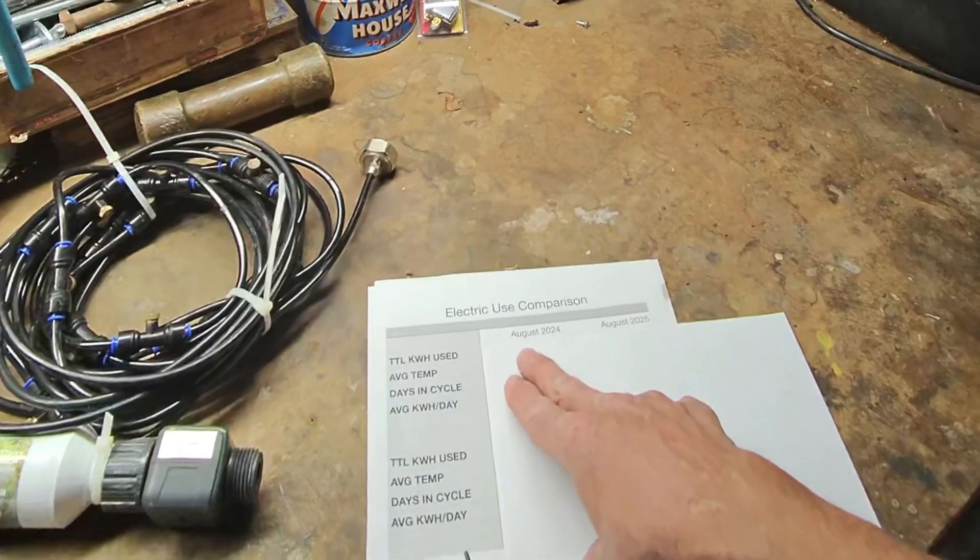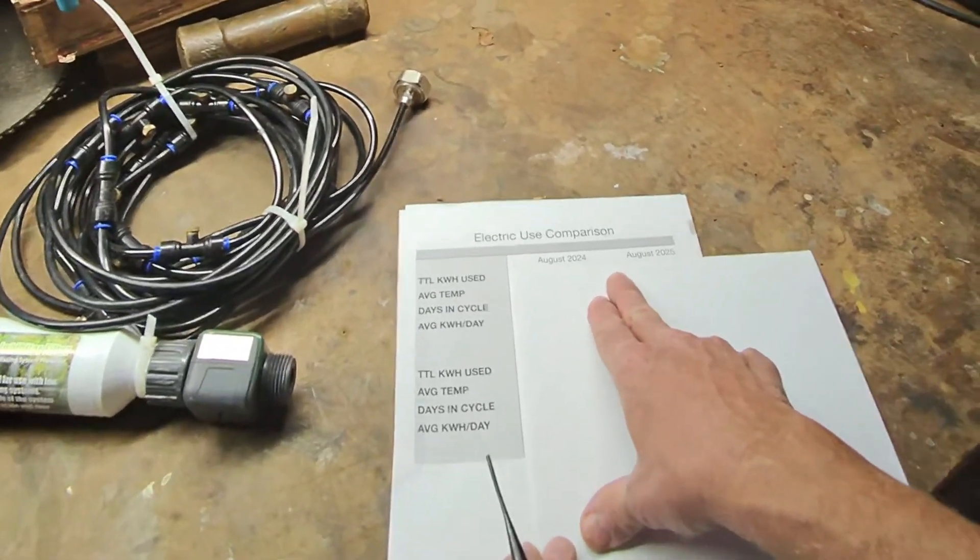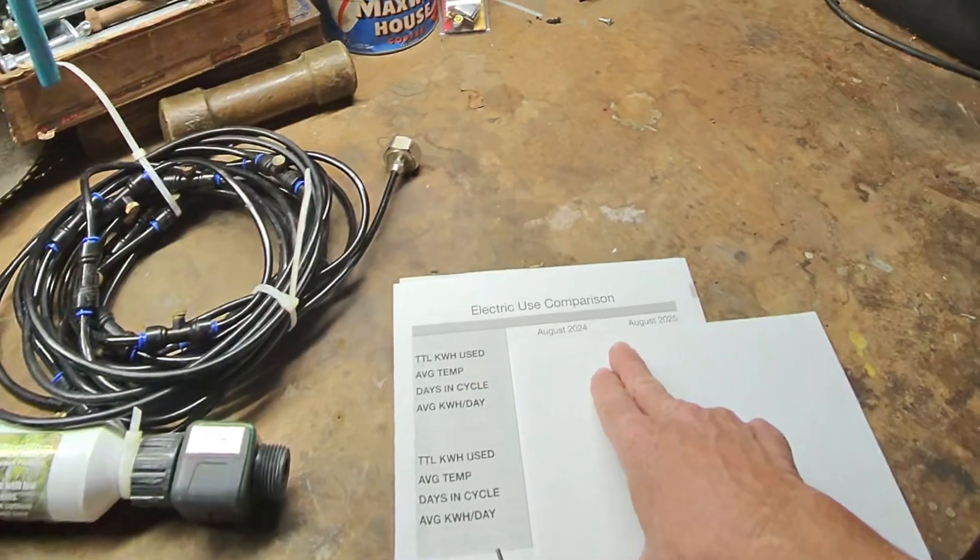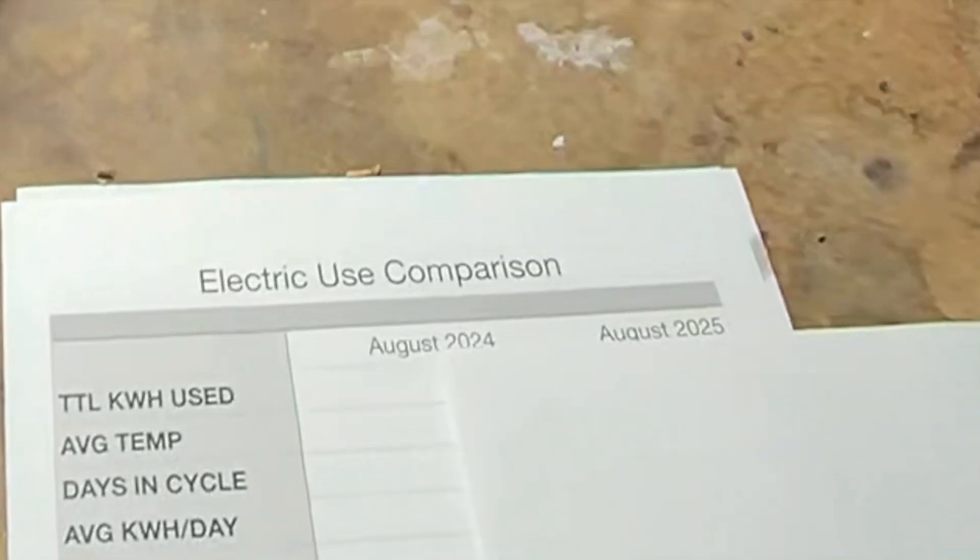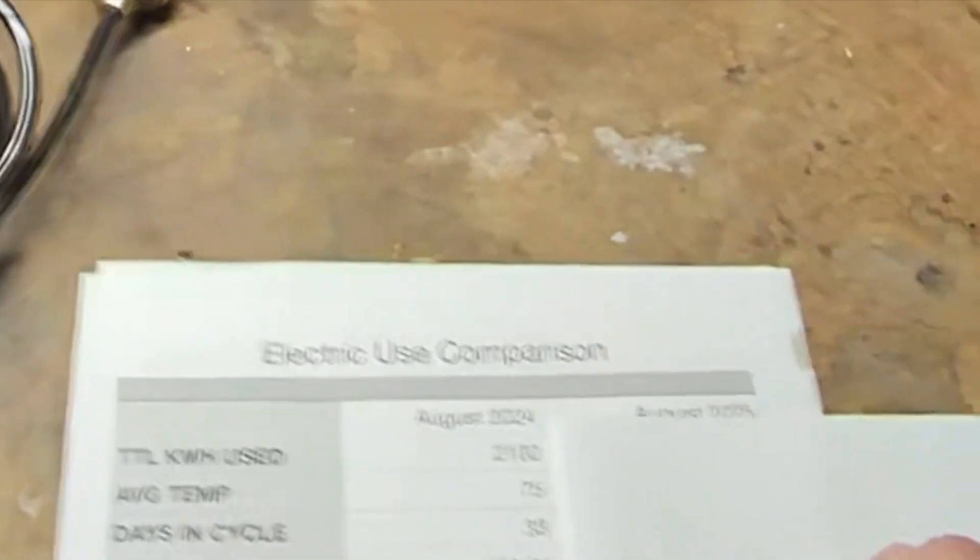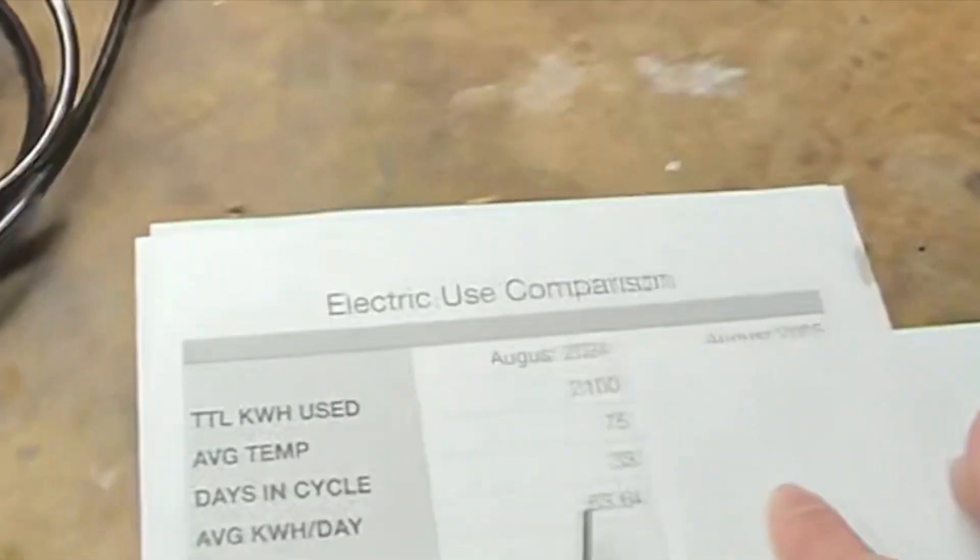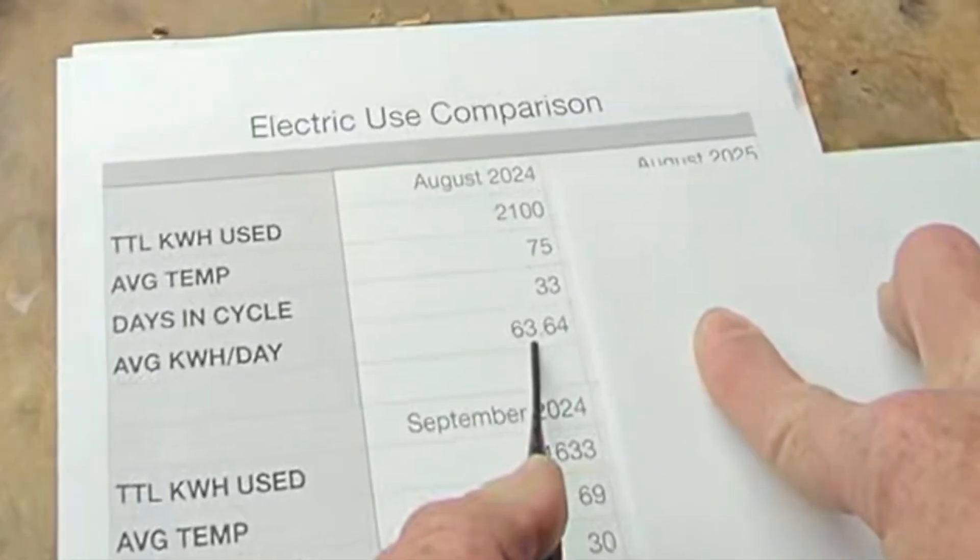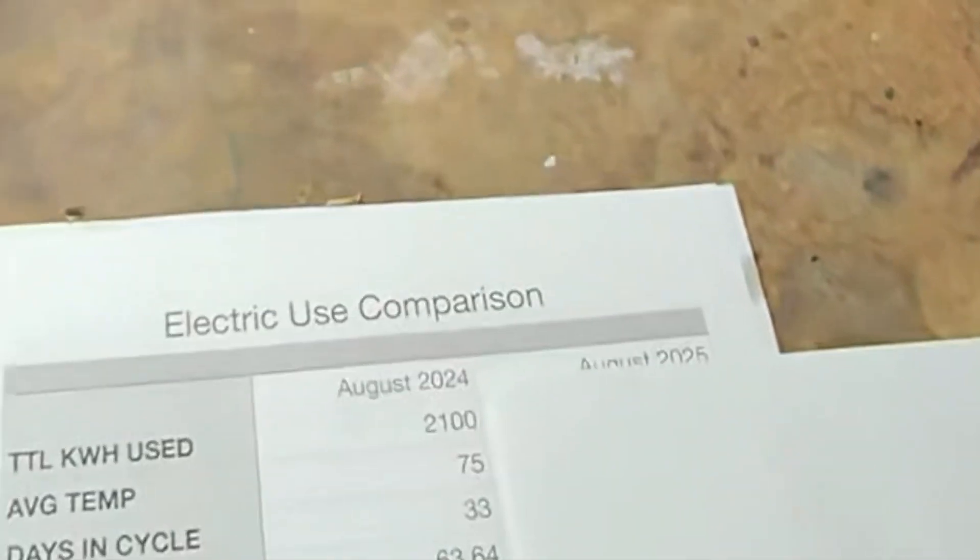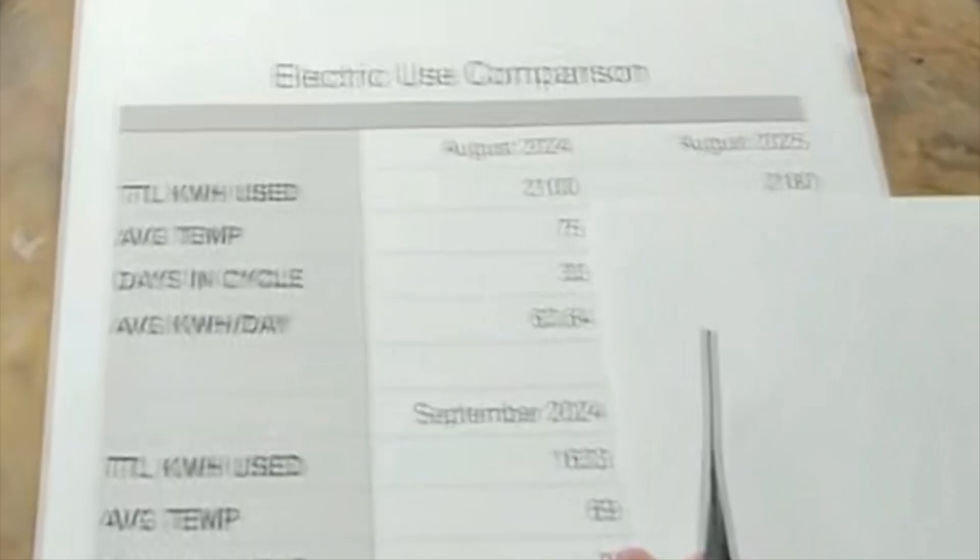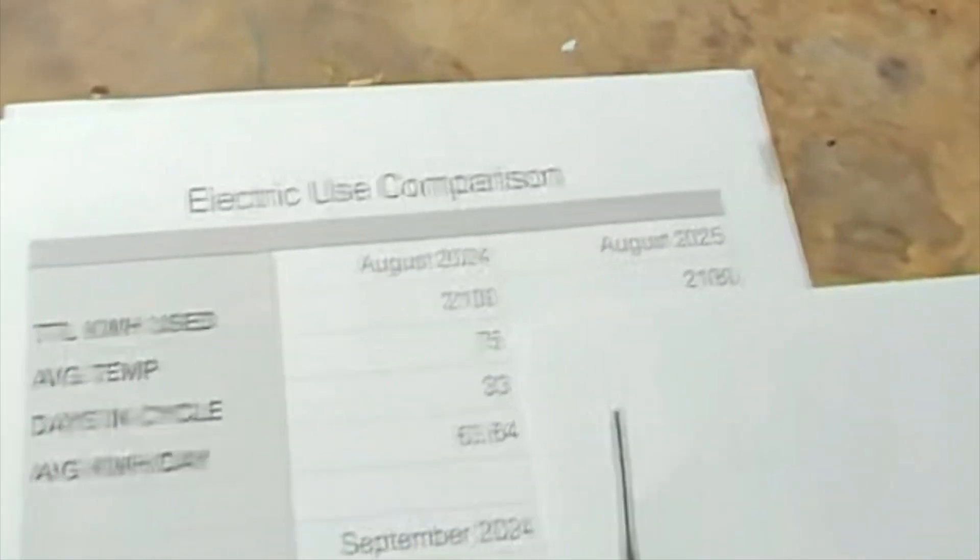Let's take a look at the numbers. And what I've done here is I've taken a look at August of 24 versus August of 25. August was the first month we had the misting system in place for a full month or the better part of a full month. And then I did the same thing for September. So let's take a look at August of 24. And last year, we used 2,100 total kilowatt hours. The average temp was 75. The days in the cycle were 33. So the average kilowatt hours used per day was 63.64.